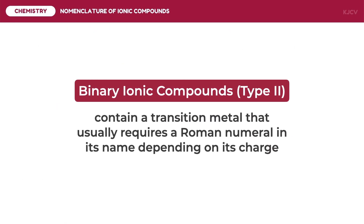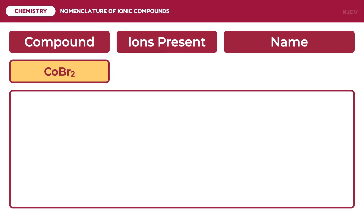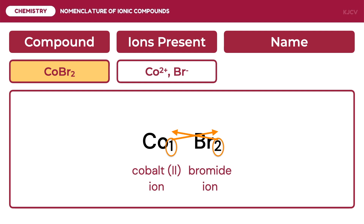Binary ionic compounds with type 2 cations use a Roman numeral depending on their charge. For example, we have CoBr₂. Since this is a binary ionic compound, we separate the two ions and temporarily write 1 as a subscript of cobalt. Doing a criss-cross of subscripts: the subscript 1 of cobalt becomes the negative 1 charge of bromine, and the subscript 2 of bromine becomes the positive 2 charge of cobalt. Thus, we have cobalt(II) ion and bromide ion. We can verify from the periodic table that bromide in group 7A has a charge of negative 1, and cobalt may have a charge of either positive 2 or positive 3. Combining the two ions, we have cobalt(II) bromide.